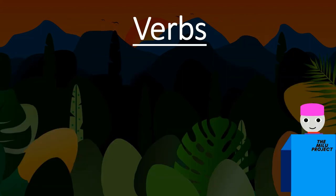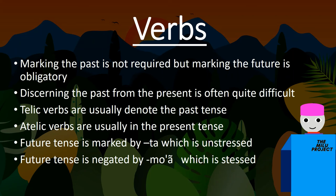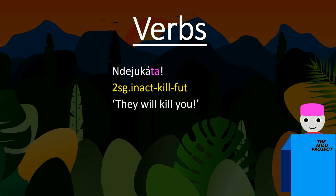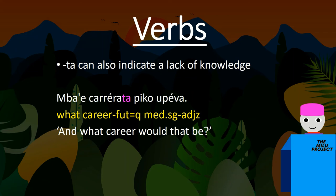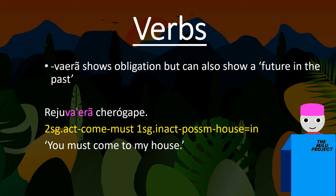Now we can finally talk about verbs. Verbs are formed by verbal roots, most of which are not derived from nouns. And whilst in English marking the future is optional but marking the past is necessary, in Guarani the opposite is true — the future tense must be marked, but there's usually a bit of ambiguity between the present and the past. Usually, telic verbs — that is, verbs with a natural end point — are interpreted as being in the past, and verbs which don't have an actual end point are often in the present tense. The future tense is marked by the suffix -ta and negated by the suffix -mooi. The affix -ta can also show a lack of knowledge or epistemic modality, whilst the suffix in this example shows either an obligation to do something or a kind of future in the past.